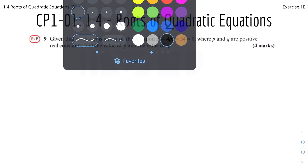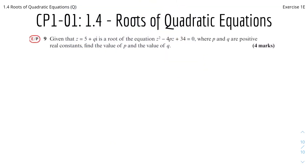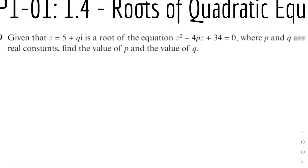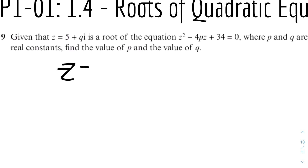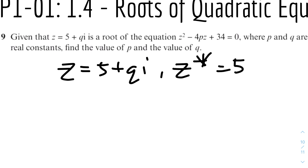The last question. Given that z equals 5 plus qi is a root of the quadratic equation z squared minus 4pz plus 34 equals 0, where p and q are positive real constants, find the values of p and q. This is a more complex example where we use algebra and compare terms. Since z equals 5 plus qi is one root, the other root must be 5 minus qi.